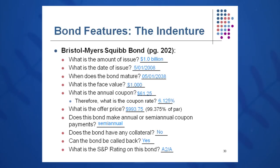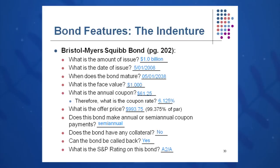Here's a sample indenture for Bristol-Myers Squibb. The amount of issue was one billion dollars, issued on 5-1-2008. The bond matures 30 years later on 5-1-2038. The face value is $1,000. The coupon listed in the indenture is $61.25, making the coupon rate 6.125%. The offer price was 99.375% of par, or $993.75.